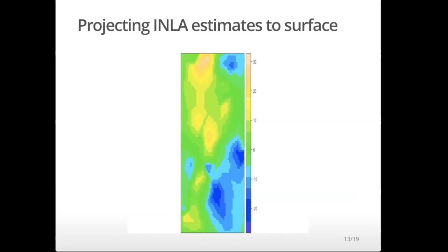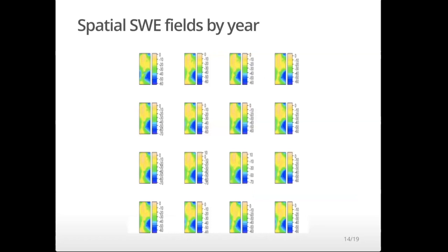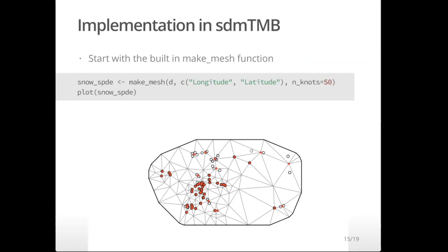Once we fit a model with INLA, we can project the estimates to some spatial surface — either in our original dataset or a new one. We can make predictions by year, so for the SNOTEL data this would represent predictions for each year of the time series. One potential downside of INLA is that because we're doing estimation in a maximum likelihood setting, it can sometimes be slow.